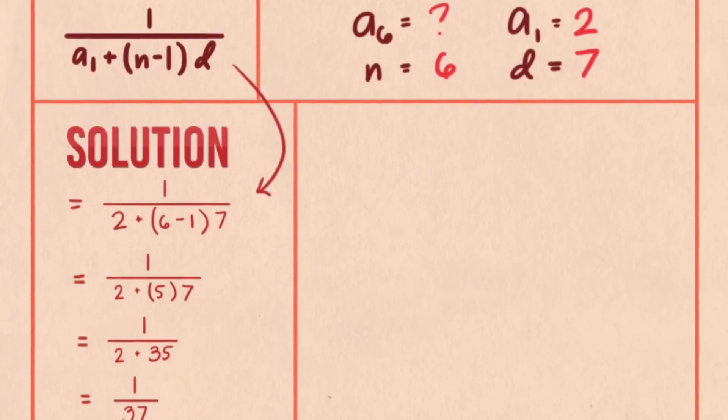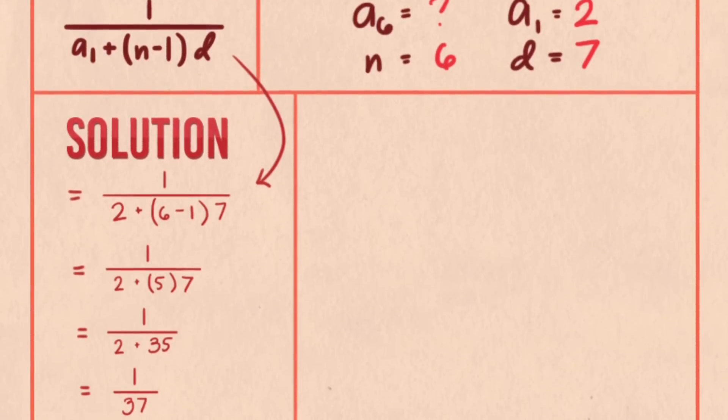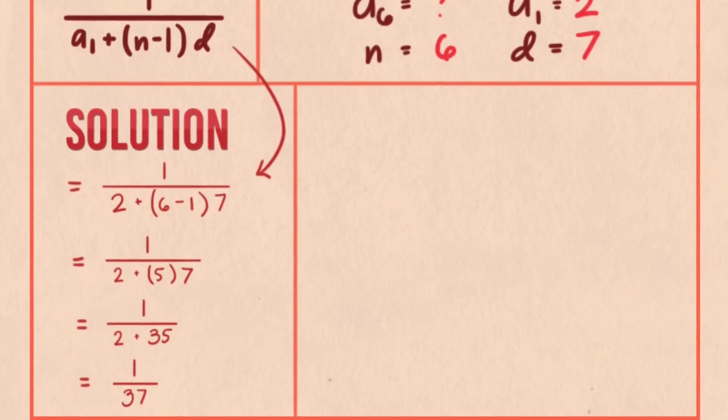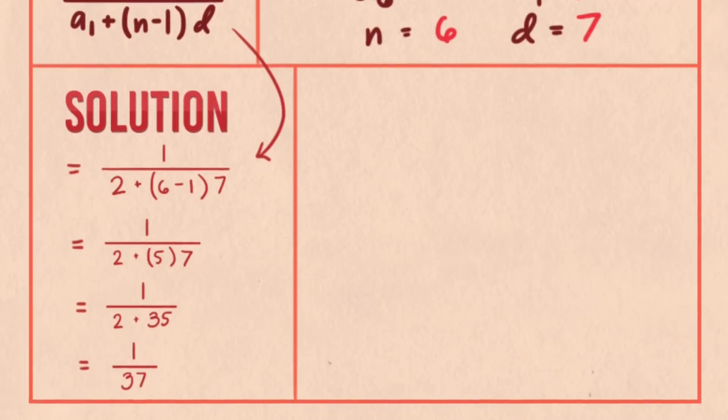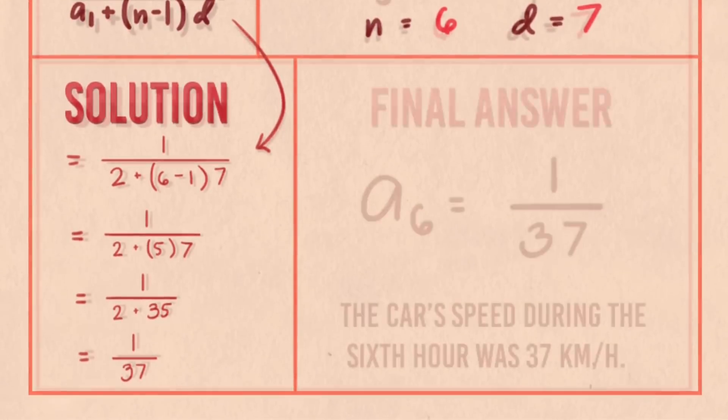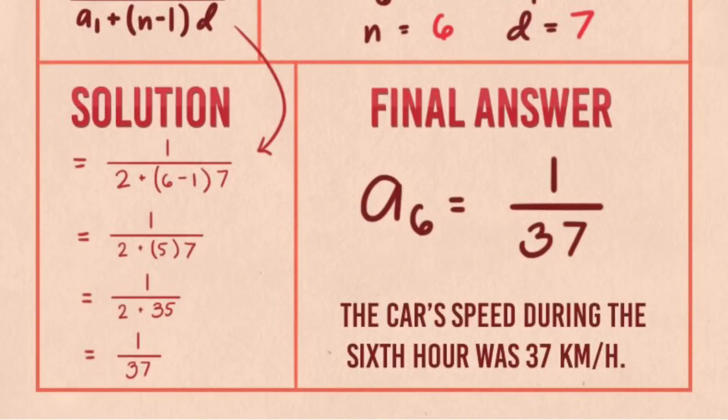Therefore, 1 is over 2 plus 35. After this, you add 35 plus 2, which is then equal to 1 over 37. So the final answer is a sub 6 equals 1 over 37. Therefore, the car's speed during the sixth hour was 37 kilometers per hour.